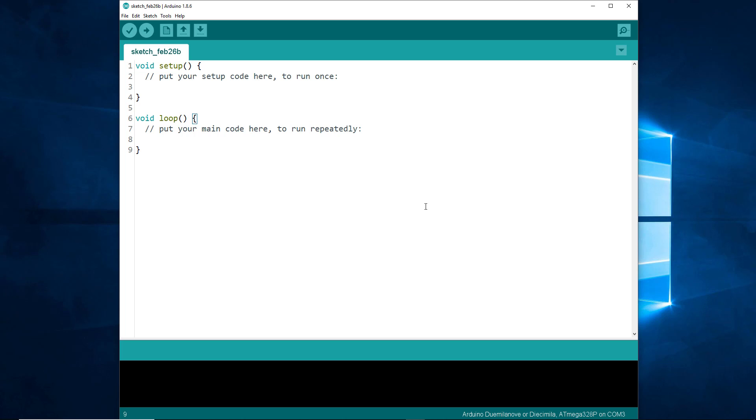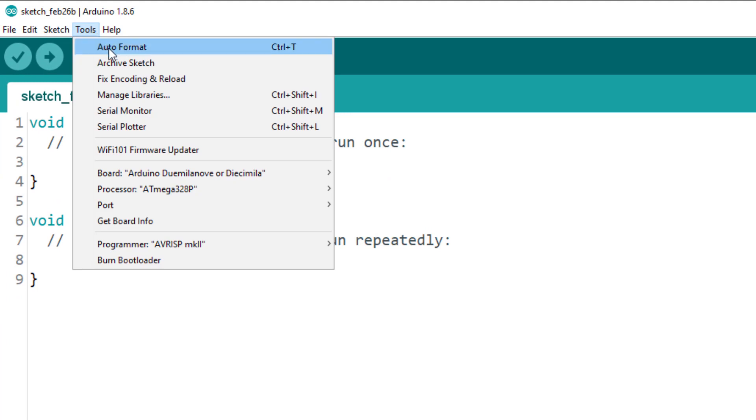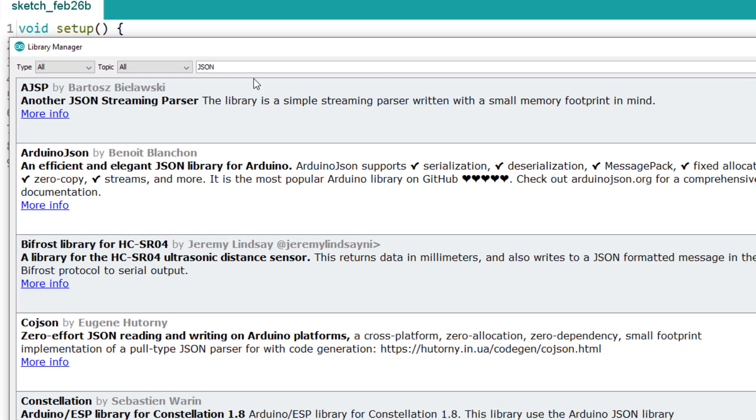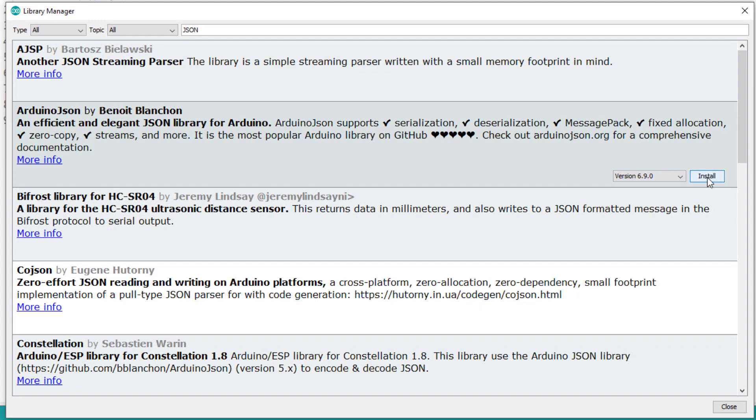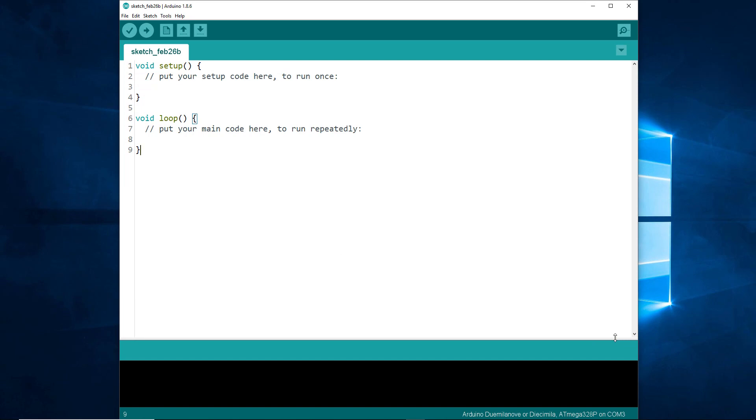First, we need to install the library. Click on Tools, then Manage Libraries to open the Library Manager. To find Arduino JSON, type JSON in the filter, then click on Install. Once the library is installed, you can close the Library Manager.